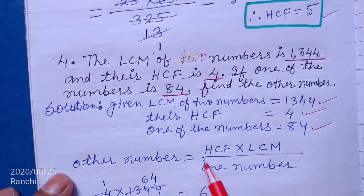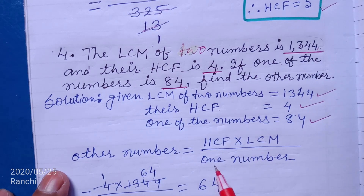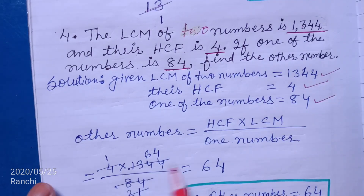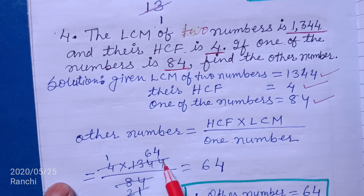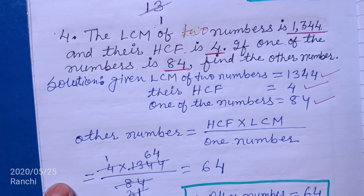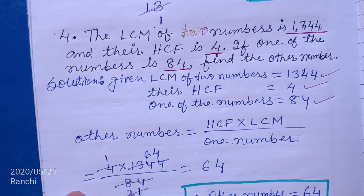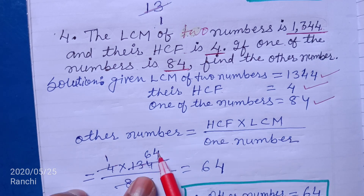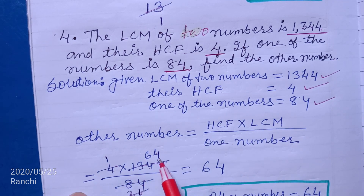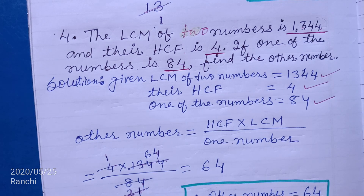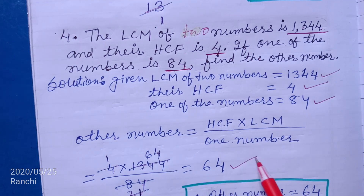Given: LCM equal to 1344, HCF equal to 4, and one of the numbers is 84. Therefore, other number equal to HCF into LCM divided by one number equal to 4 into 1344 divided by 84. Since 84 is divisible by 4, cancel: 4 cancels giving 21. Then 1344 divided by 21 gives 64.